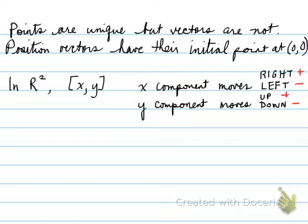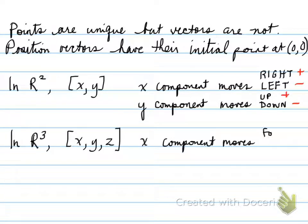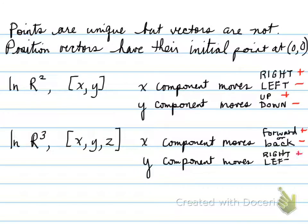Now, R³ is a little bit different. In R³, we have the components [x,y,z]. The x component moves forward if it's positive, backward if it's negative. The y component moves right if it's positive, left if it's negative, and the z component moves up if it's positive, down if it's negative. So a little bit different in 3-space compared to 2-space.